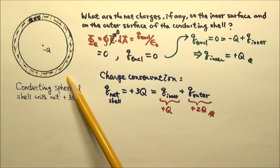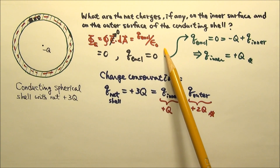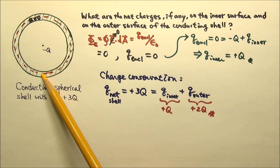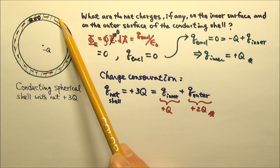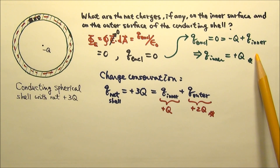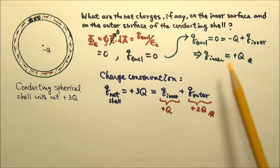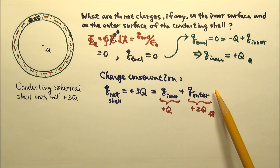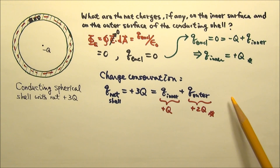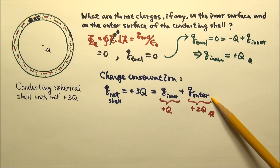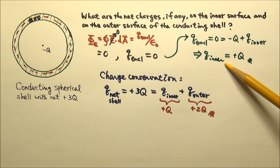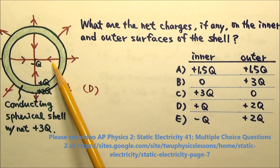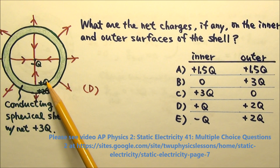So for this kind of problem, we use Gauss's law and make a Gaussian surface that is completely inside the conductor to find the net charge on the inner surface. And we use charge conservation to find the rest of the net charge that is on the outer surface. For the charge on the inner surface, we can also use electric field lines to find the charges on the inner surface.